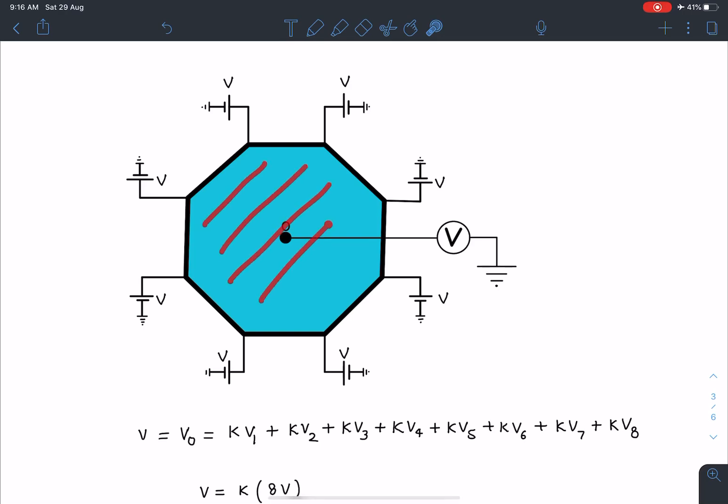In fact the entire plate will be at same potential because charges are at rest, current is not flowing, and this is a conducting plate. So entire plate will be at same potential and you can say this potential is V0, which is going to be V in this case. Potential at the center is going to be V in this situation.